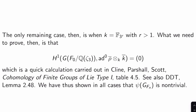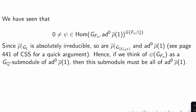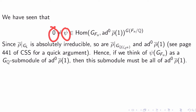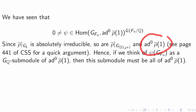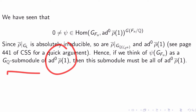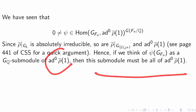So we've shown in all cases that psi(Gal(F_N)) is non-trivial. Now, psi is not zero as an element of Hom(Gal(F_N), ad^0 rho-bar(1)^{Gal(F_N/Q)}). Since rho-bar|_{G_L} is absolutely irreducible, so is rho-bar restricted to Gal(Q(ζ_{L^N})) on ad^0 rho-bar(1) (see CSS page 441). And so if we think of psi(Gal(F_N)) as a G_Q-submodule of ad^0 rho-bar(1), this submodule must be all of ad^0 rho-bar(1) by absolute irreducibility.